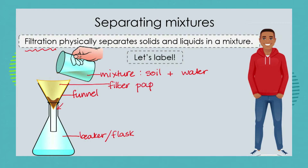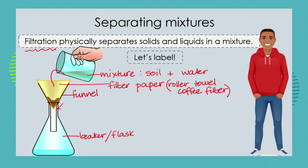In terms of doing this investigation at home, you don't need any fancy paper. You could use roller towel or a coffee filter for a coffee machine. What we do is pour the mixture of soil and water into the filter paper, which is folded inside the funnel, very slowly and gently so we don't get any splashes.